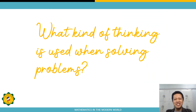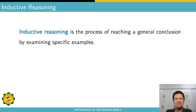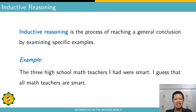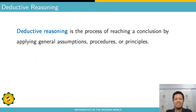The big question now is: what kind of thinking is used when solving those kinds of problems? There are two types of reasoning when solving problems or making decisions. The first is inductive reasoning. Inductive reasoning is the process of reaching a general conclusion by examining specific examples. An example: 'The three high school math teachers I had were smart — I guess all math teachers are smart.'